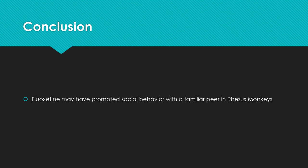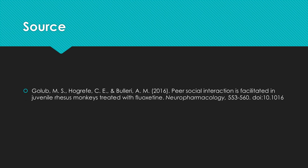In conclusion, this experiment was successful in demonstrating that fluoxetine may have promoted social behavior with a familiar peer in rhesus monkeys with a susceptible genotype.